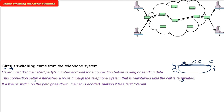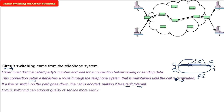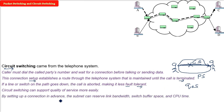If something in the network goes down, the call will be aborted. Therefore, circuit switching is less fault-tolerant than packet switching. Packet switching can tolerate faults because packets can take another route. In circuit switching there is no other path — just the single established path. However, the quality of service is better because the communication network can reserve bandwidth, switch buffer spaces, and CPU time in advance.